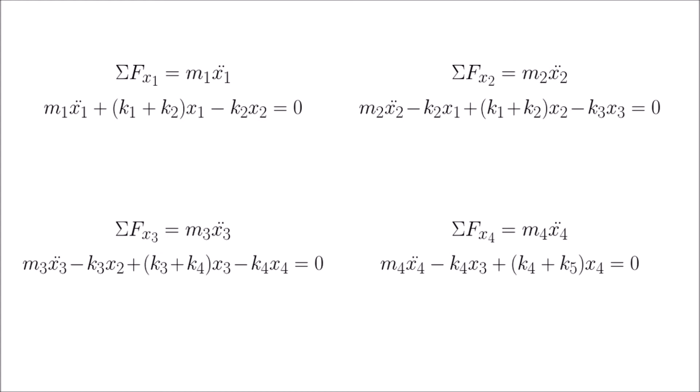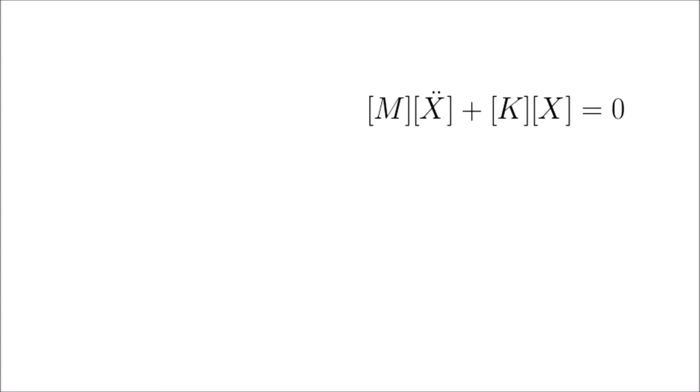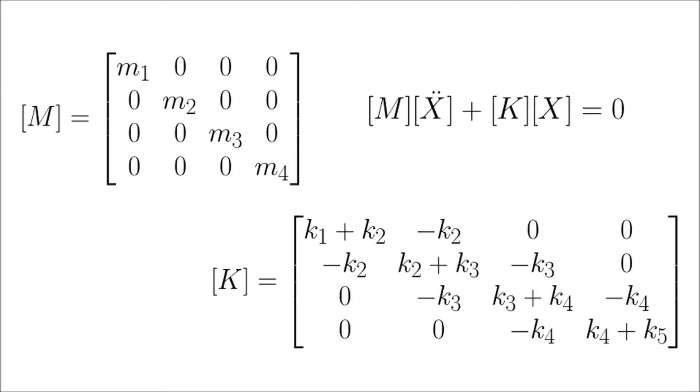Observing the equations of motion here, we see that a pattern starts to develop that we can take advantage of. To better see this pattern, we'll use what's called matrix notation. For a multi-body system, we can write all of the system masses into a single matrix called the mass matrix, and all of the spring constants into a single matrix called the stiffness matrix. For the four-body problem under consideration, our mass matrix and stiffness matrix look as shown on the slide.